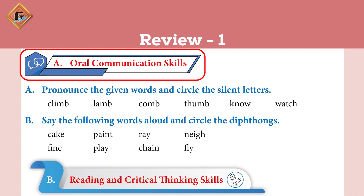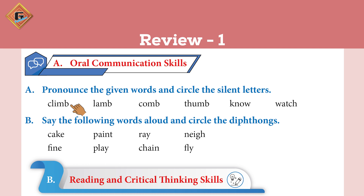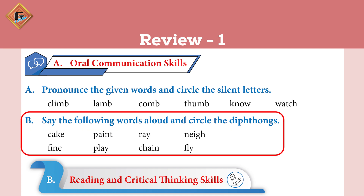Part A is Oral Communication Skills. Section A: Pronounce the given words and circle the silent letters. Let's do it together. Say with me: Climb — circle B. Lamp — circle B. Comb — circle B. Thumb — circle B. Knob — circle K. Watch — circle T.